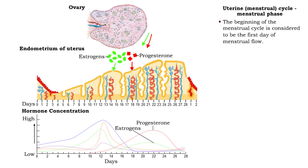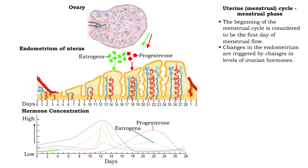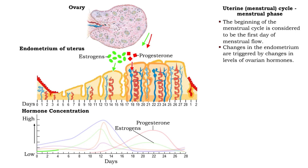By convention, the beginning of the menstrual cycle is considered to be the first day of the menstrual flow. Changes in the endometrium are triggered by changes in levels of ovarian hormones.